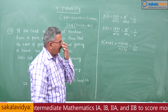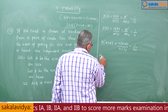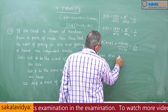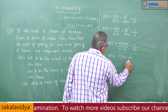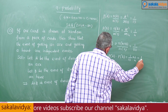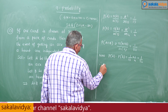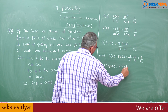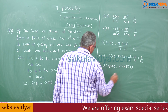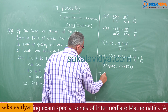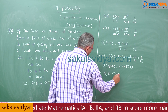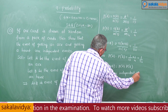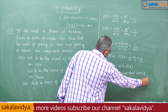Now we have to verify. P of A into P of B equals 1 by 13 into 1 by 4, which is 1 by 52. Therefore, P of A intersection B is equal to P of A into P of B. That implies A and B are independent events. Hence it is proved.